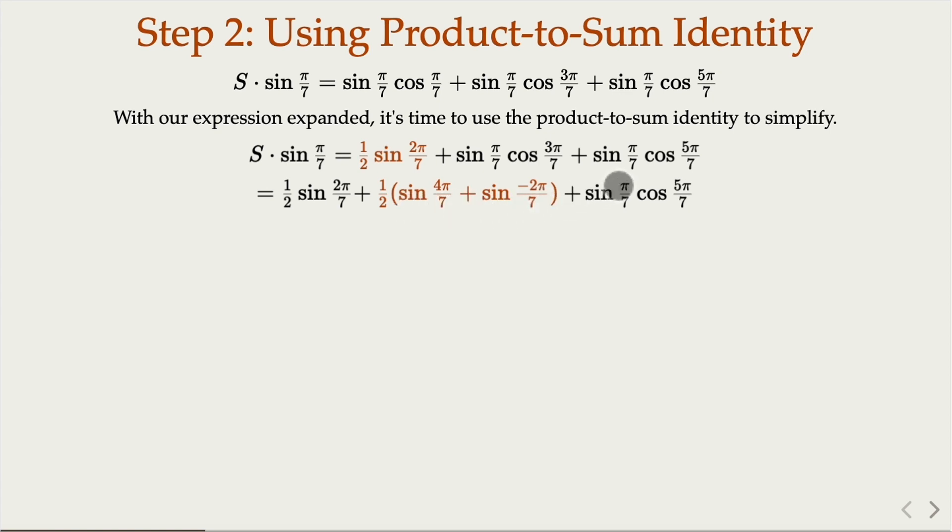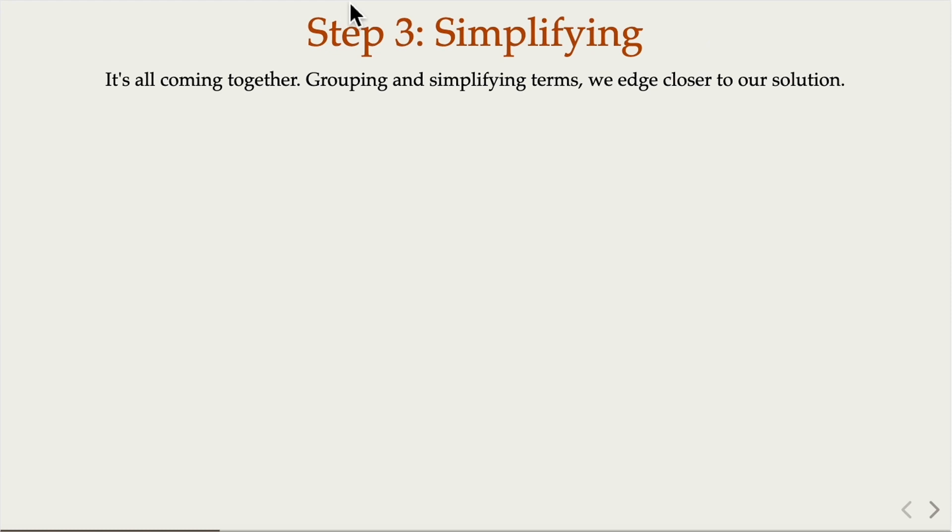Now we continue with the final term, this product to sum. This time we're going to have what? When you add it's 6pi. When you minus it's going to be negative 4pi. All right, 6pi, negative 4pi. So this is what we have.